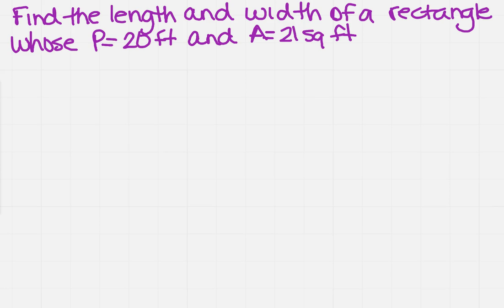I notice right off the bat I'm looking for length and width and it gives me a value for perimeter and area. So what I need to know is what are those formulas. The formula for perimeter is two times the length plus two times the width.